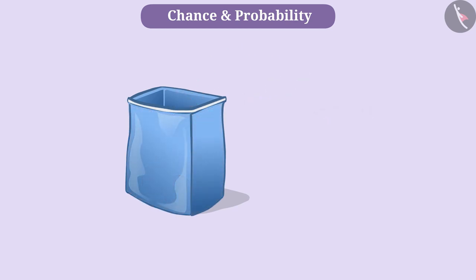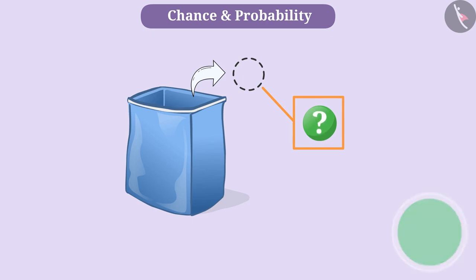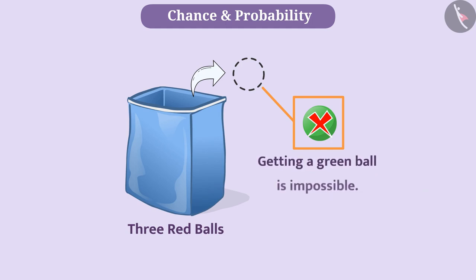Is it also certain that if we draw out one ball from three red balls without seeing, then it can be a green ball? Definitely your answer will be no, because taking a ball without seeing from three red balls and getting a green ball is impossible.